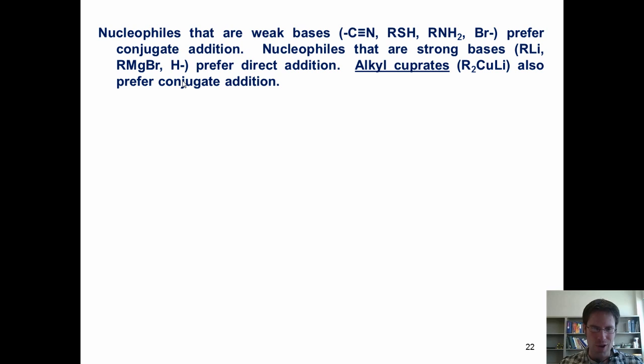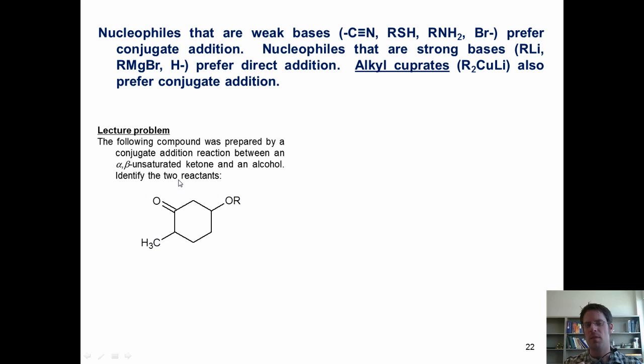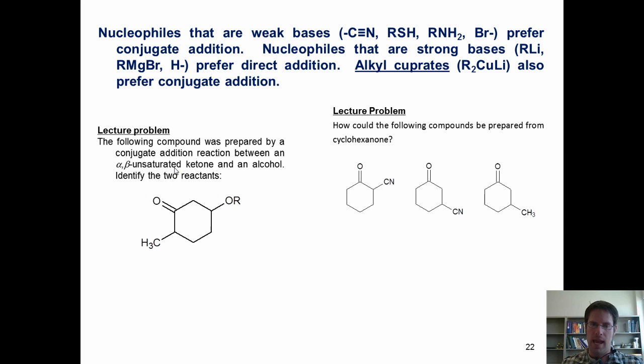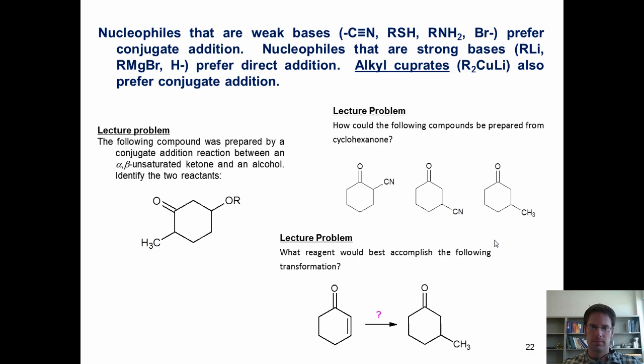Are you ready for some problems? The following compound was prepared by a conjugate addition reaction between an alpha-beta unsaturated ketone and an alcohol — identify the two reactants. Also: how could the following compounds be prepared from cyclohexanone? And what reagent would best accomplish the following transformation?